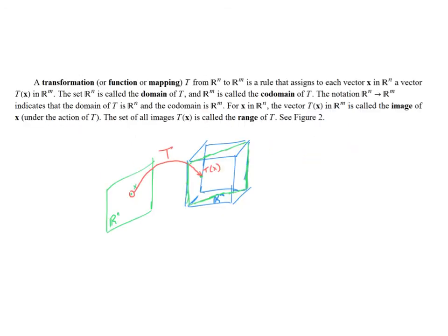On this slide, we have the terms that we will use throughout this section and moving forward in the course. In this section, we're dealing with transformations, which you can think of as functions or mappings. A transformation from Rn to Rm is a rule that assigns every vector X to a vector T of X. The set in Rn is called the domain of T. And the Rm is called the codomain. The space that we are mapped into is called the codomain.